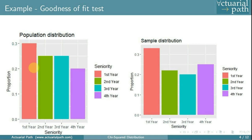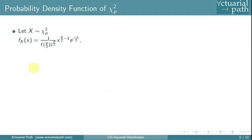Having seen two examples of how the chi-squared distribution can be used in practice, let's write down the probability density function. For a random variable x following the chi-squared distribution with p degrees of freedom, the PDF is: 1 divided by [gamma(p/2) times 2^(p/2)] multiplied by x^(p/2 - 1) times e^(-x/2), where p must be greater than 0.